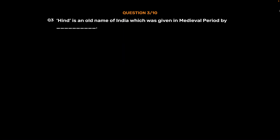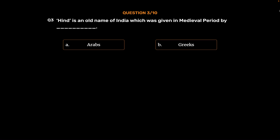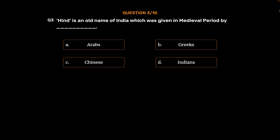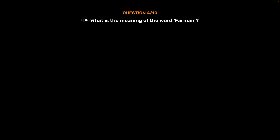Question No. 3. 'Hind' is an old name of India which was given in the medieval period by: Option A: Arabs. Option B: Greeks. Option C: Chinese. Option D: Indians. The correct answer is Option A: Arabs.